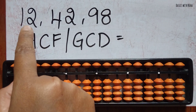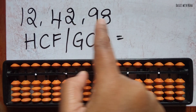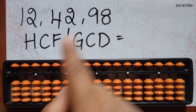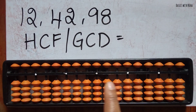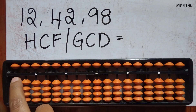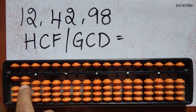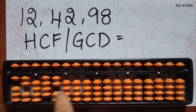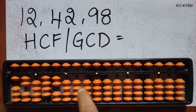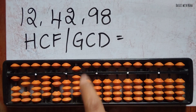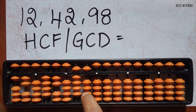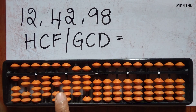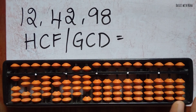To find the HCF of 12, 42, and 98, first place the numbers on the tool. Place 12, leave one rod gap and place 42, then leave one rod gap and place 98. Now I'm using Euclid's algorithm to solve this on the tool.